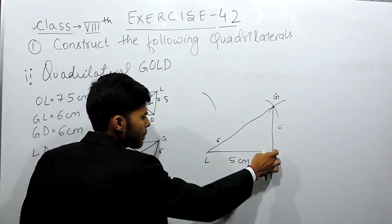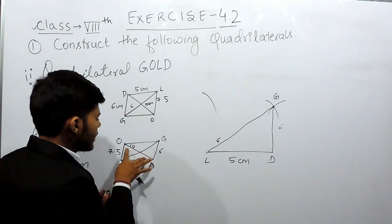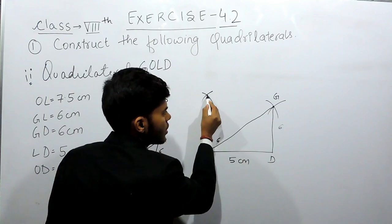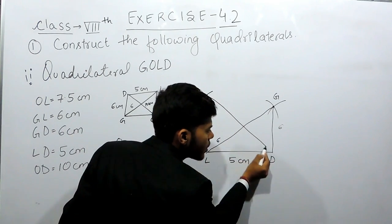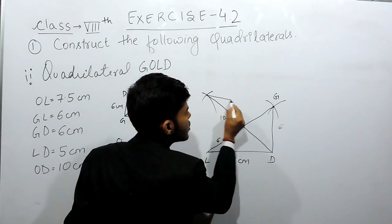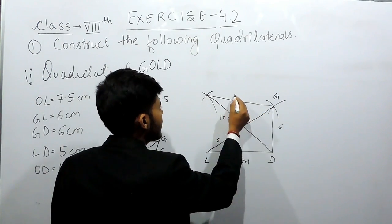Now we will put the compass at point D, open it to 10 cm, and cut an arc of 10 cm like this. So this will be 10 cm.